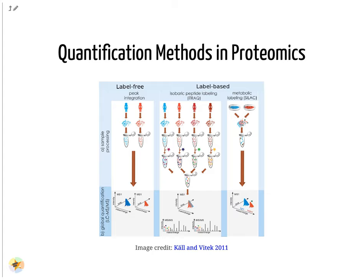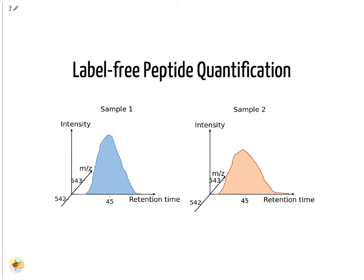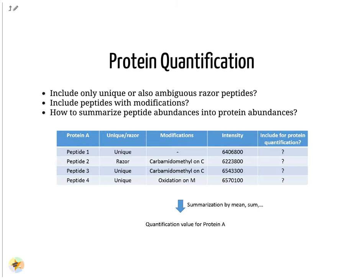In metabolic labeling, amino acids with heavy isotopes are added to the cell culture medium of one condition. During cell growth these amino acids get incorporated into proteins, so proteins of the heavy condition can be distinguished from their normal counterparts via a fixed mass shift. For label-free quantification, all peak areas in the MS1 spectra are integrated. Peptide abundances are summarized into protein quantifications, requiring decisions about which peptides to include. The protein abundance may be computed by taking the median, mean, weighted mean or sum of all its peptides.